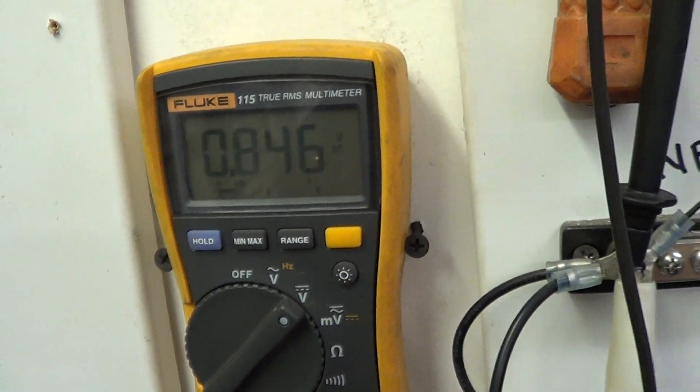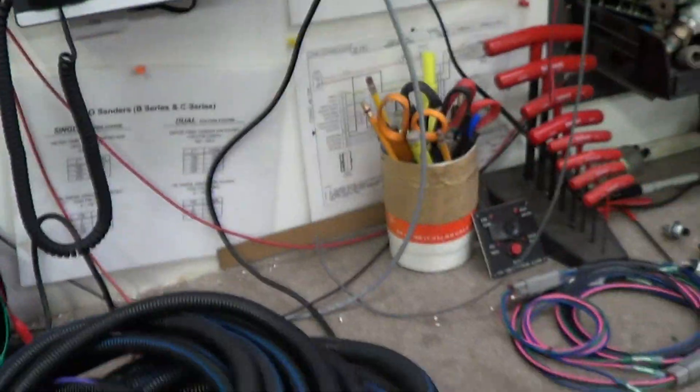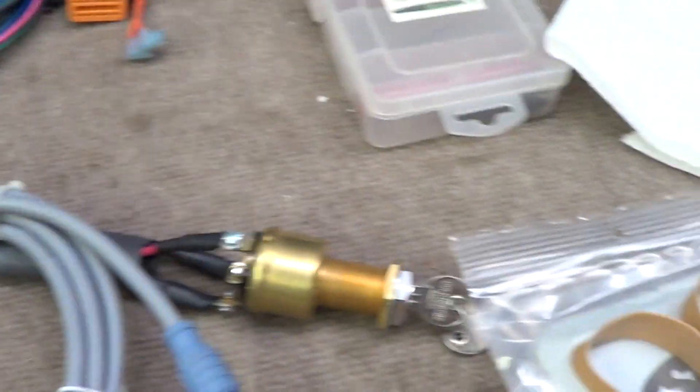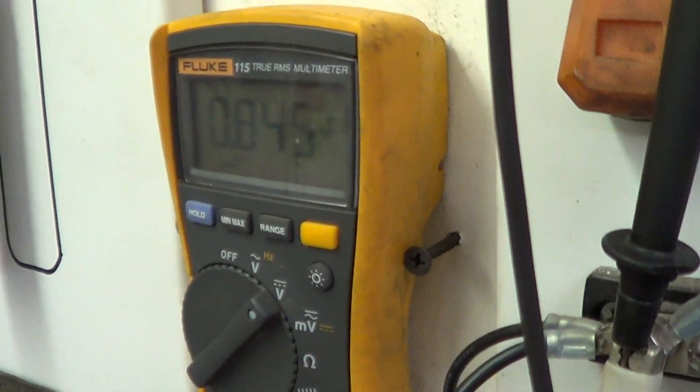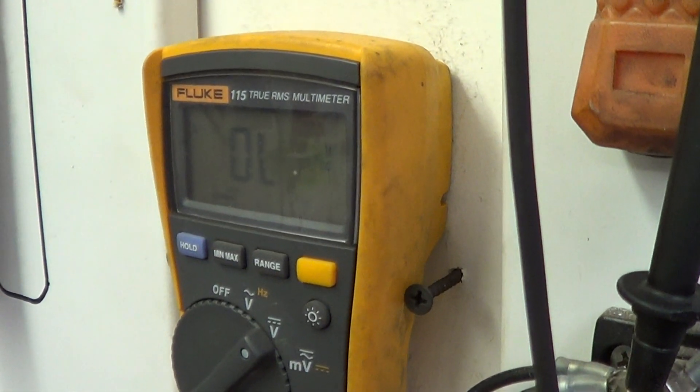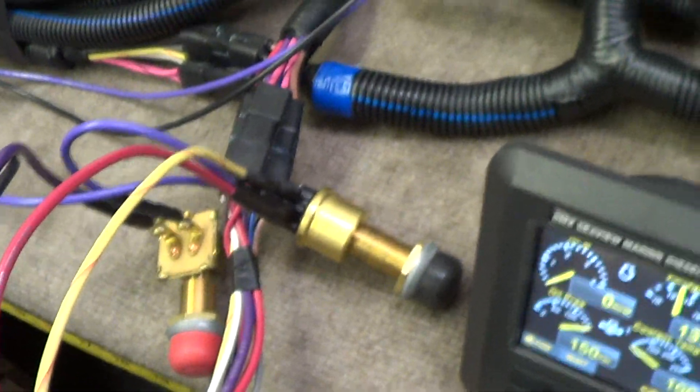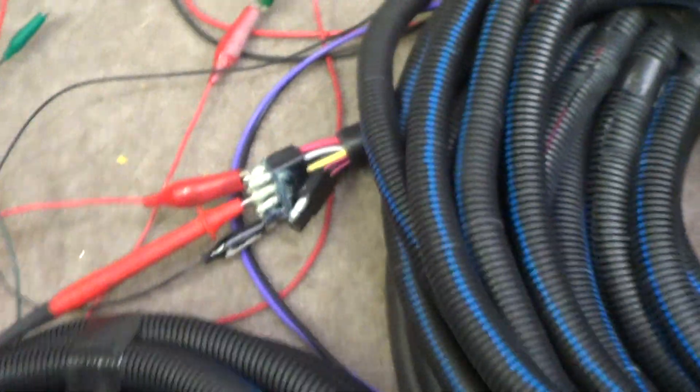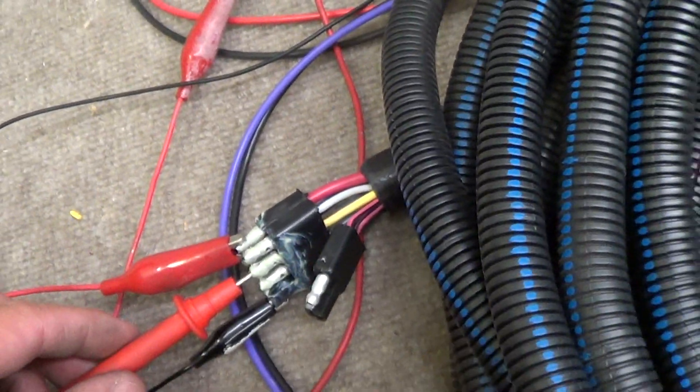Alright, we got power. Now, can we also start the engine from the key switch at the main station? Let's see. There we go. So, the key switch works. The upper station engine start works. Let's test the engine stop.